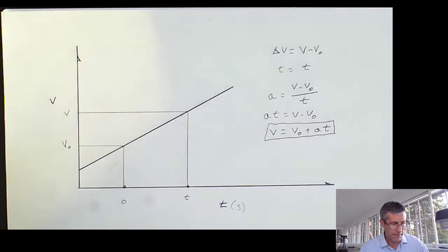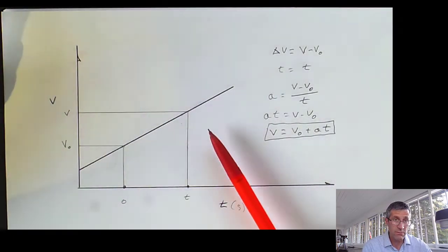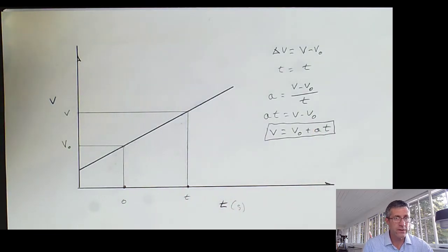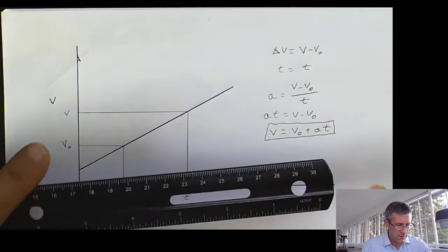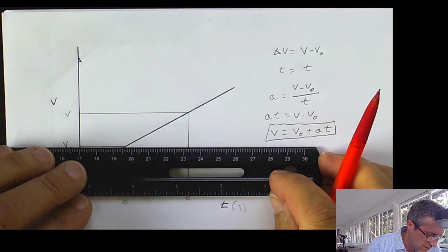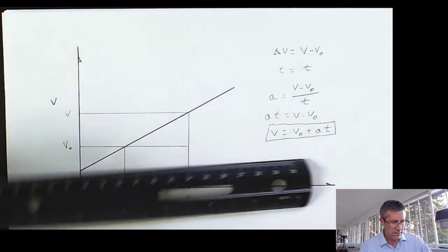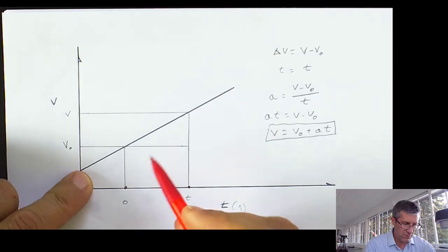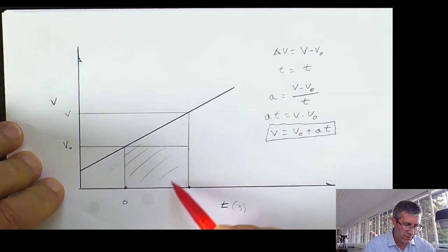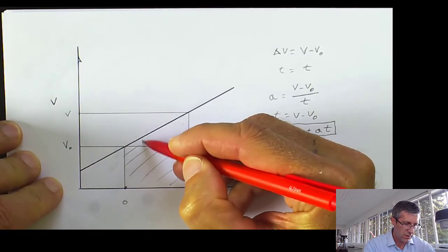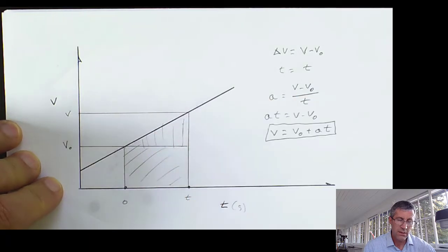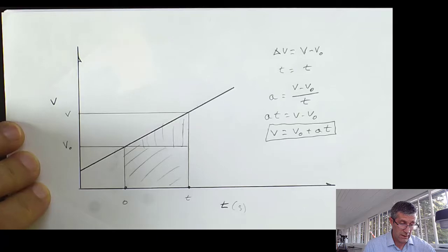Second one. Remember, my slope tells me acceleration, and area under the curve tells me displacement. It doesn't tell me where I started and where I ended. It tells me my change in displacement. So let's figure out the area under the curve. To make this easier, I'm going to make this into a box and a triangle. We can find the area of these.